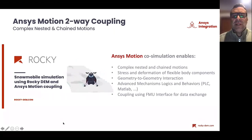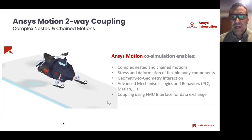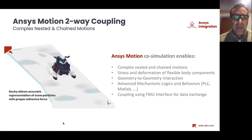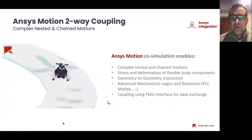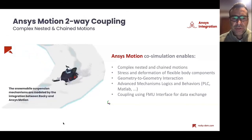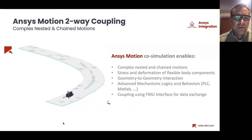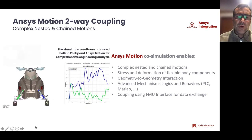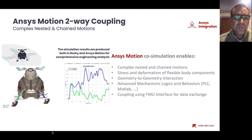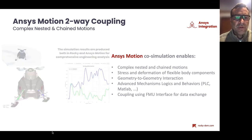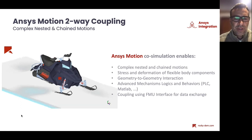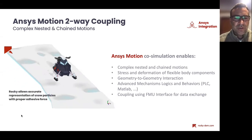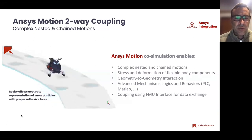More recently, beyond our built-in motion capability, we've launched integration with Ansys Motion. When you have complex nested chain motions requiring rigid and flexible analysis together with complex motions, geometry-to-geometry interaction, and more, you can leverage a more complex motion simulation analysis. Here you can see a snowmobile: all the suspension and dynamics were developed using Ansys Motion, and the snow — the particle — plus its interaction with the ground was done with Rocky.